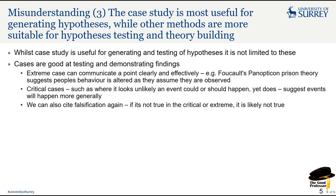Critical cases — such as where an event is unlikely or shouldn't happen yet does — suggest that events will happen more generally. So if you find an environment where something probably shouldn't happen and yet it does, you can say that if it shouldn't happen here and it does, it's more likely to happen in other areas. We can also cite Karl Popper's falsification: if something is not true in the critical or extreme case, it is likely not to be true. Falsification is really about — if it fails anywhere, you've got to revisit your rule or theory.